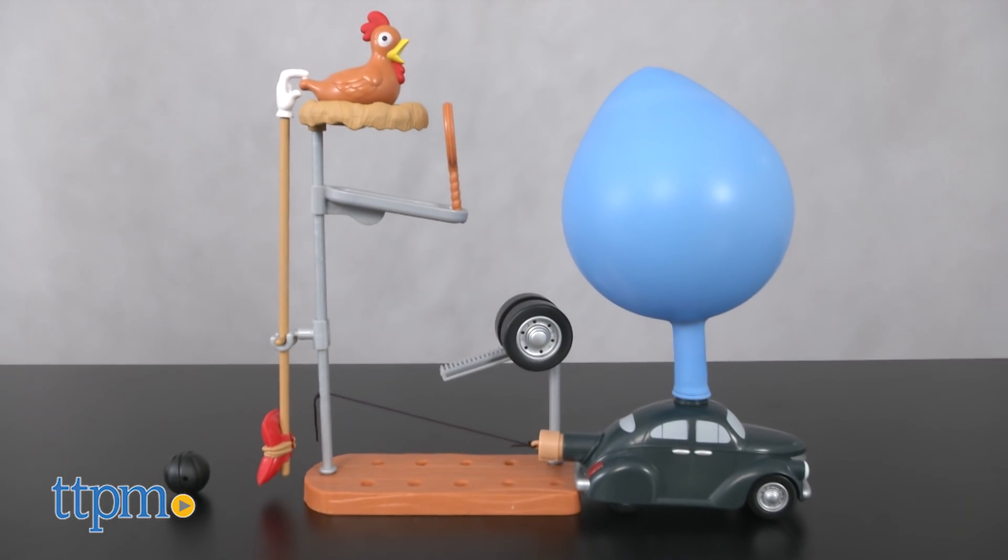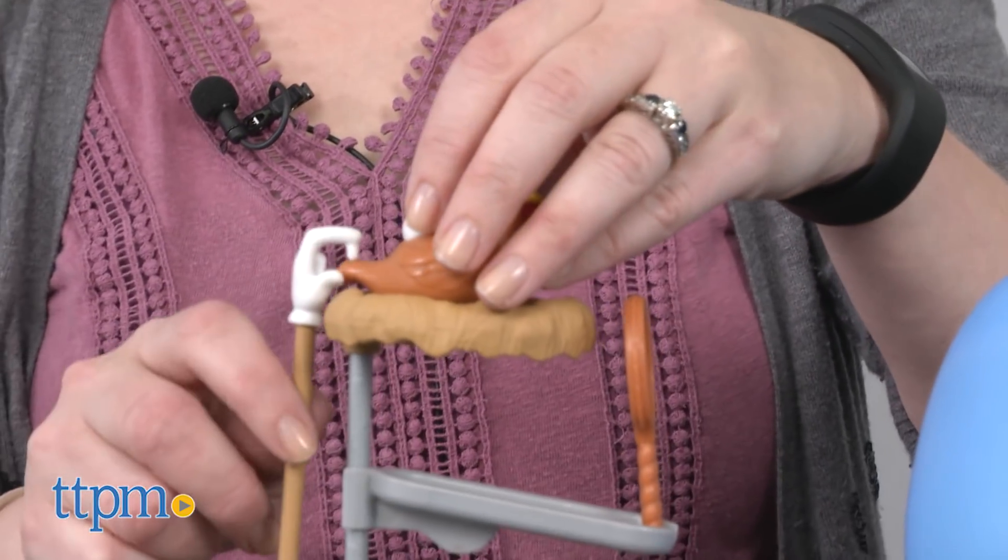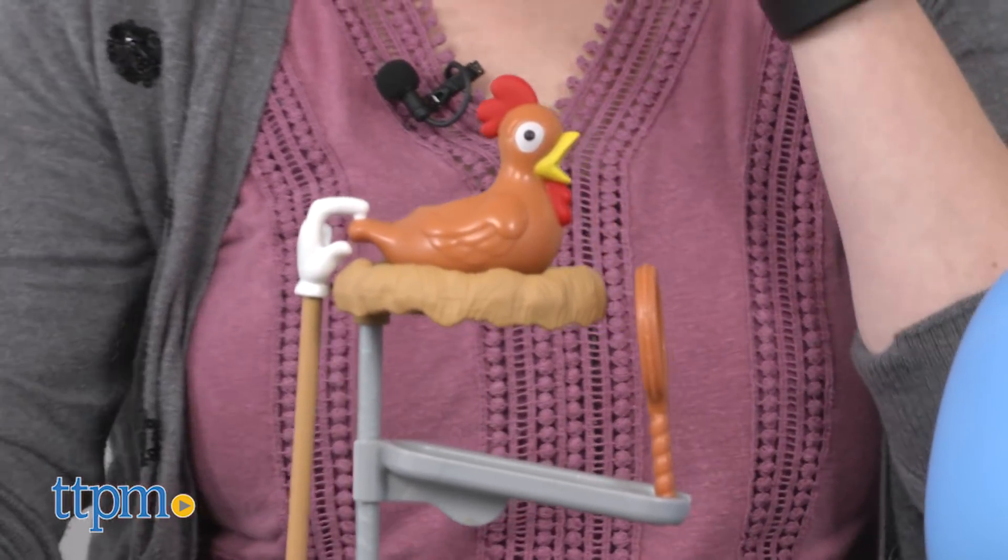This toy lets kids ages 8 and up build their own Rube Goldberg machine, a contraption that uses a chain reaction to accomplish a very simple task in a very complicated manner.